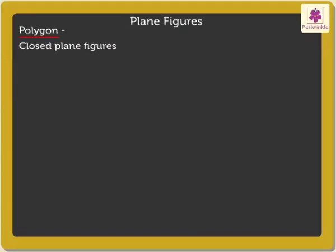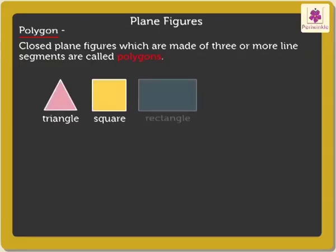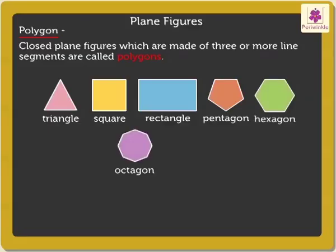Closed plane figures which are made of three or more line segments are called polygons. Triangle, square, rectangle, pentagon, hexagon, octagon, decagon, etc. are polygons.